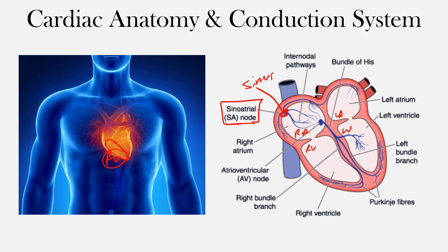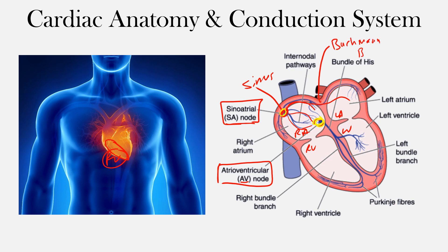From the sinus node, you have internodal pathways that travel to the AV node — the atrioventricular node. From those internodal pathways, one also comes over to the left side and depolarizes the left atrium; we call that the Bachmann bundle. So the Bachmann bundle depolarizes the intra-atrial septum and the left atrium.